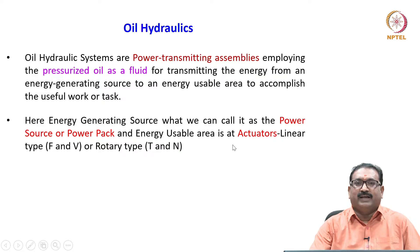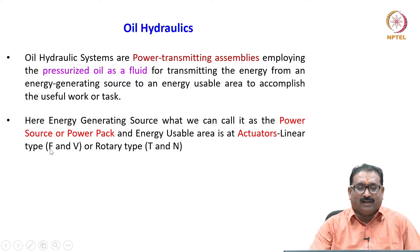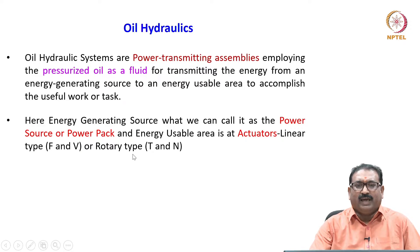Actuators are of two types: linear actuators and rotary actuators. In a linear actuator, the output parameters are force and velocity. In a rotary actuator, the output parameters are torque and speed.